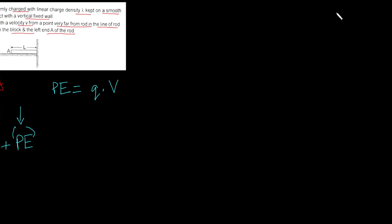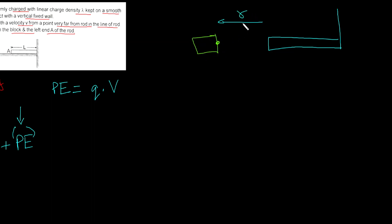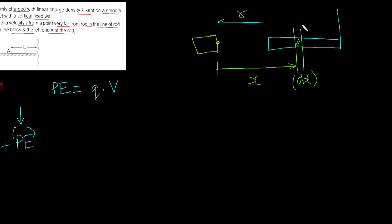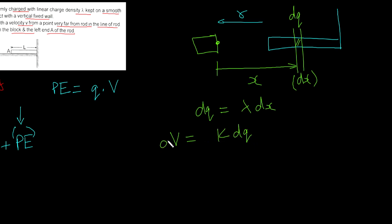Let's say this is our rod, with the wall on the right. If we need to find the potential energy at distance R — let's say the block stops at distance R — then at that point kinetic energy is zero and we need to find the potential. Consider an element DX at distance X from the block; its charge is DQ equal to lambda times DX. The potential contribution from this element is DV equals K DQ by X.